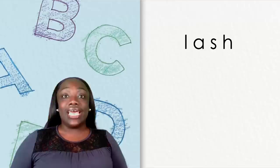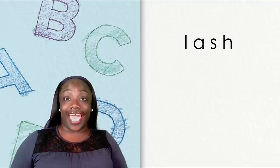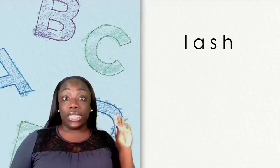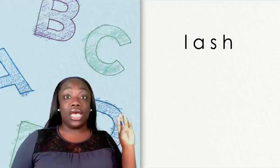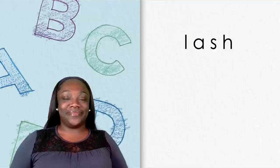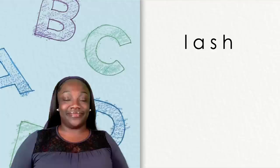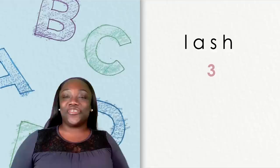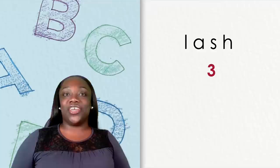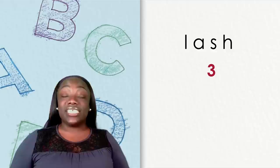Let's do another word: lash. Say it with me: lash. Listen as I stretch the word out: l-a-sh. Now you try: l-a-sh. How many sounds does lash have? There are three sounds. Now that we know that, we can figure out which letters to use for each sound and spell the word correctly. The sounds are l-a-sh.